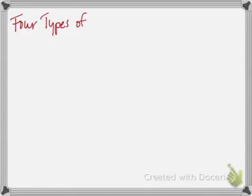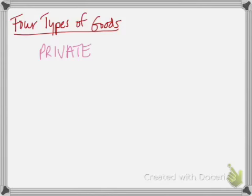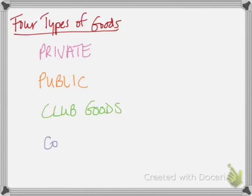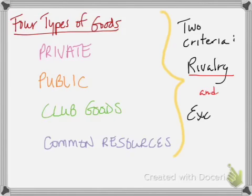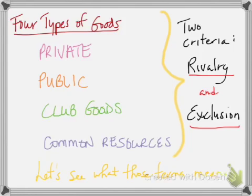We're going to shift gears a bit and talk about four different types of goods: public, private, club goods, and common resources. The way economists categorize these types of goods is based on two criteria: rivalry and exclusion.